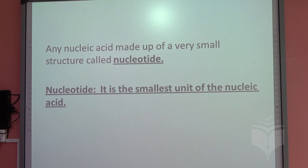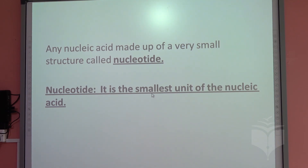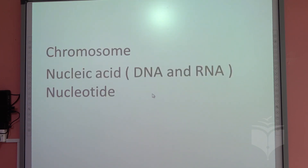Any kind of nucleic acid — DNA or RNA — is made up of a very small structure. This basic unit of nucleic acid is called a nucleotide, and it is the smallest building block of nucleic acid. To summarize: chromosomes are made up of nucleic acid, whether DNA or RNA, and nucleic acid is made up of nucleotides.